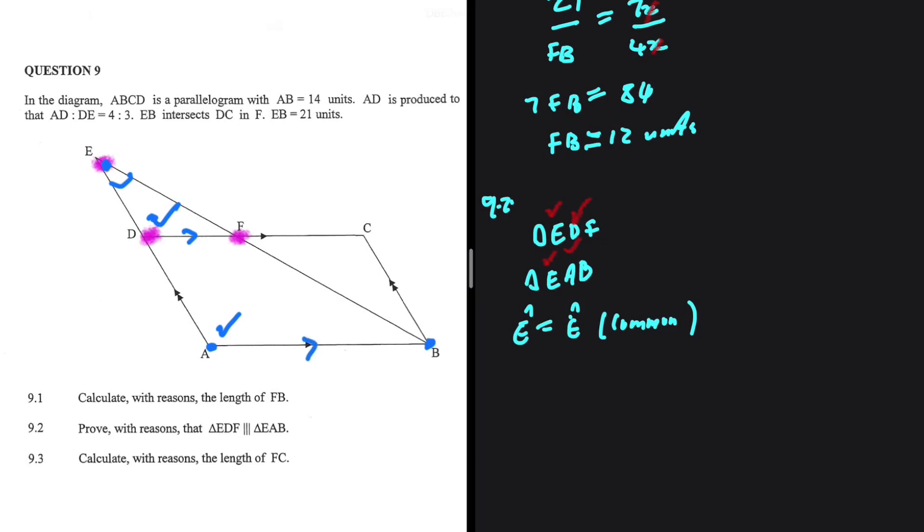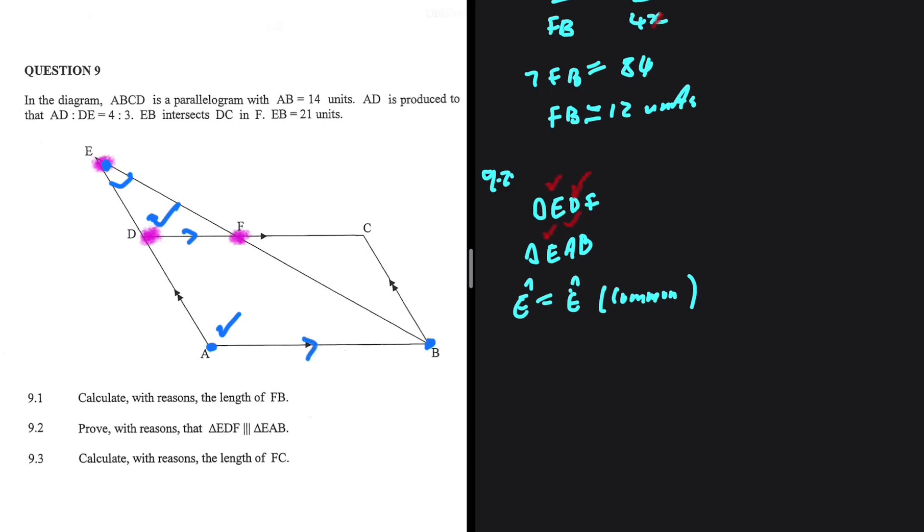So angle A is corresponding angle D. So we're going to say that angle D is equals to angle A. This is corresponding angles.